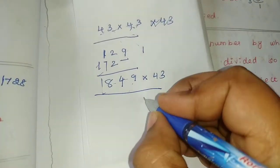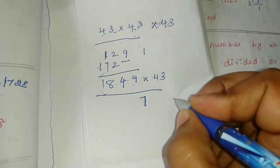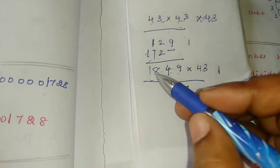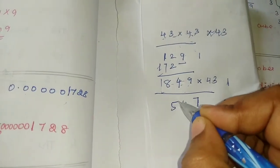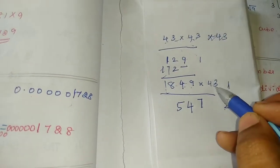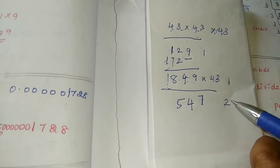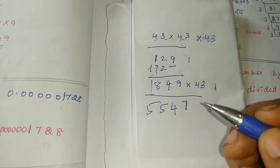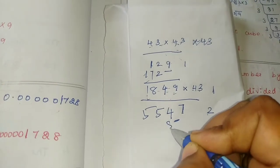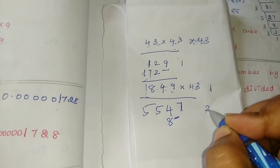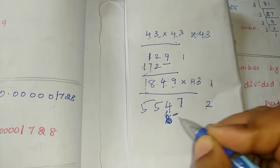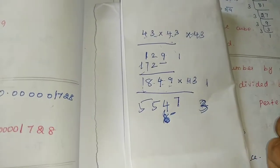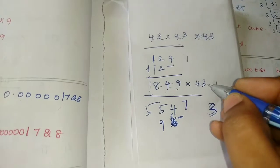Continuing the factorization: 9 × 3 = 27, balance 2, 4 × 3 = 12, 12 + 2 = 14, balance 1, 8 × 3 = 24, 24 + 1 = 25, balance 2, 1 × 3 = 3, 3 + 2 = 5. Then 9 × 4 = 36, balance 3.